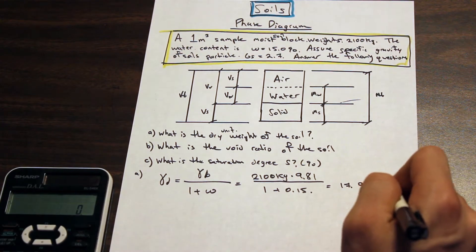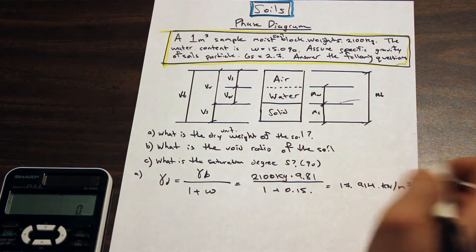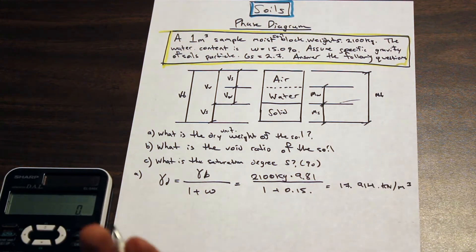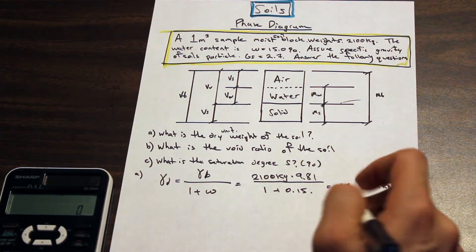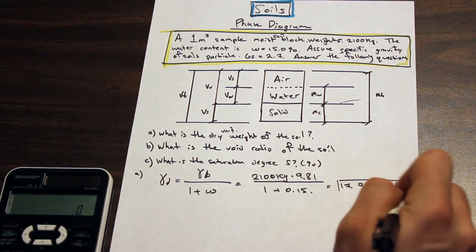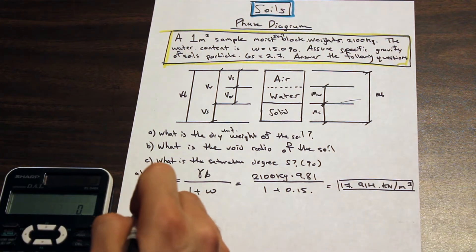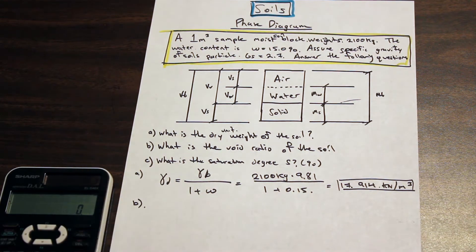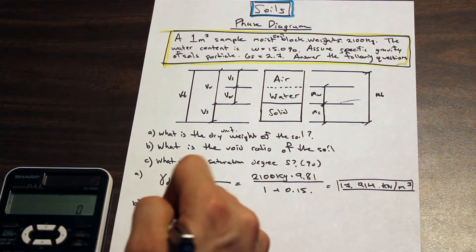We divide that by 1000 to get the result in kilonewtons per meter cubed. You can leave it in newtons per meter cubed if they don't specify, but it's best to leave it in kilonewtons per meter cubed. That's the answer to part A. Now let's move on to part B — what is the void ratio of the soil.